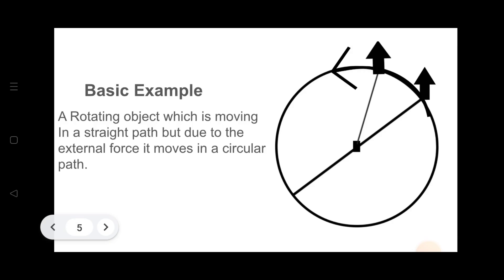The object itself is moving in a straight line, but because of the rotational force, it appears to move in a circular path. But at each point of its rotation, the object wants to move straight. You see, this happens because of the external force acting on this object.